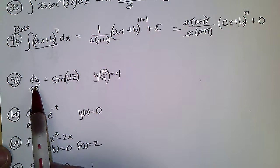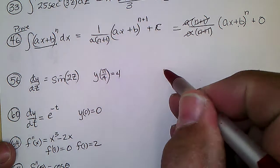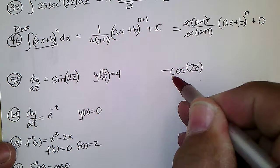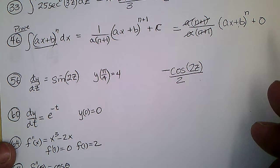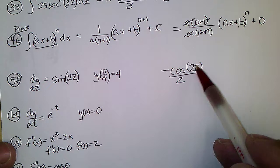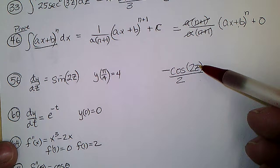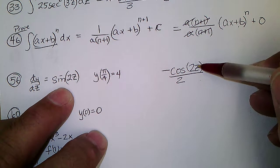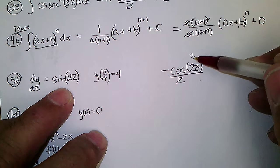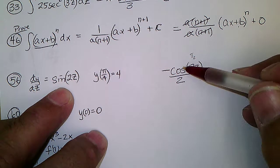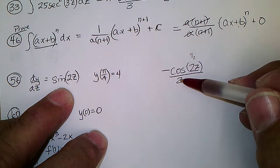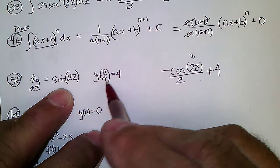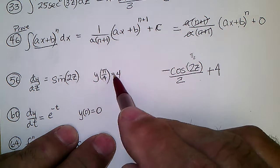The derivative of function y is given, so the integral would be negative cosine of 2z, divided by 2. When we put in pi over 4: pi over 4 times 2 is pi over 2, and cosine of pi over 2 is 0, so 0 divided by 2 is 0. We need to add plus 4 to make y equal 4 at the initial condition, so that is y.